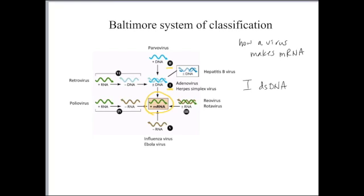It does not matter if it's linear or circle, just a double-stranded DNA genome. And the Class 2 viruses have a single-stranded DNA genome.